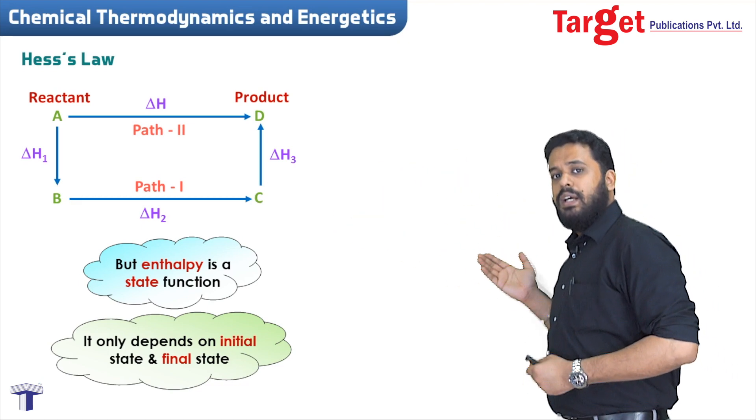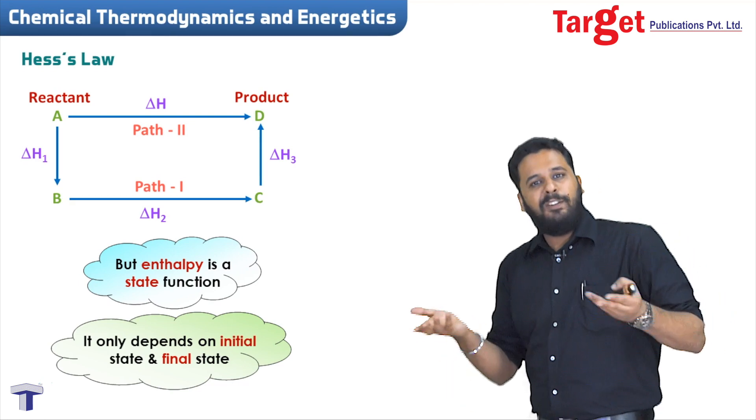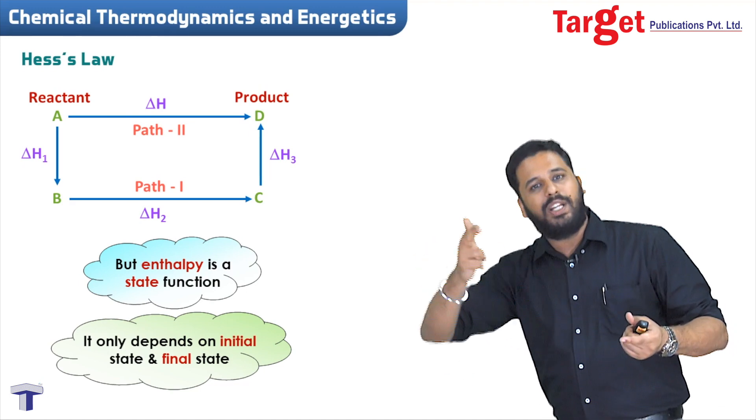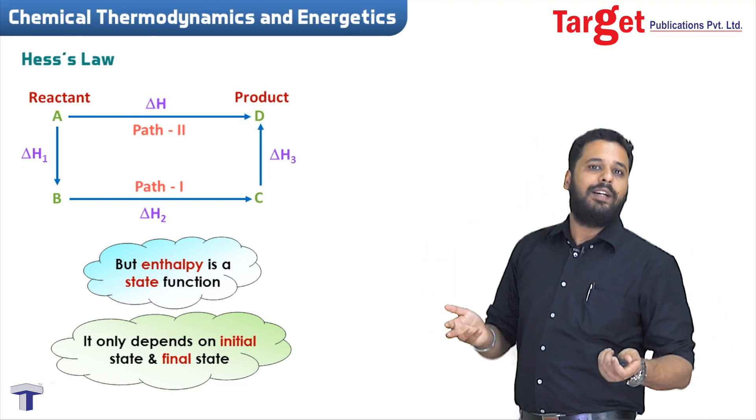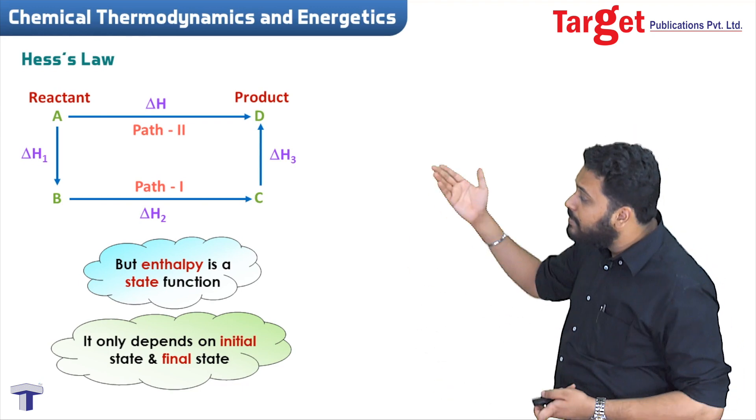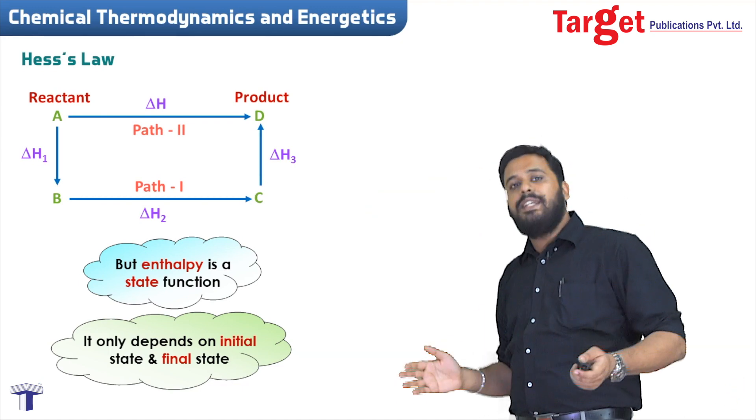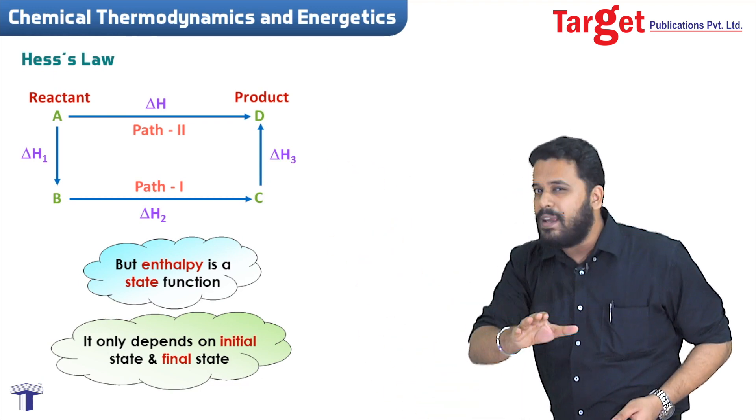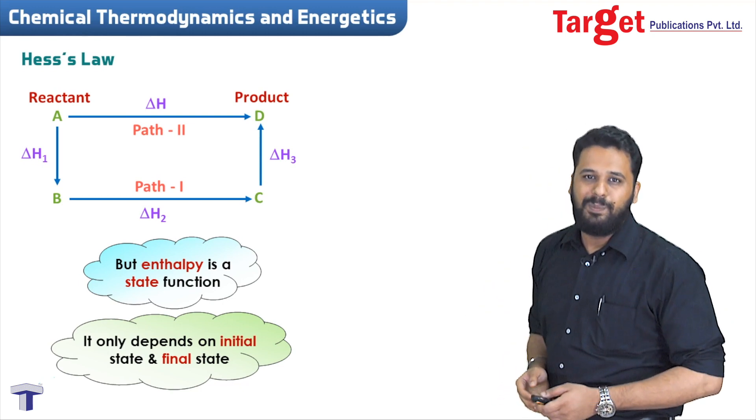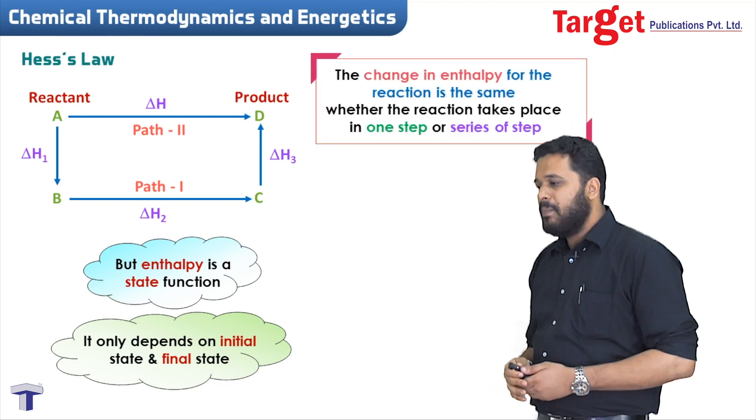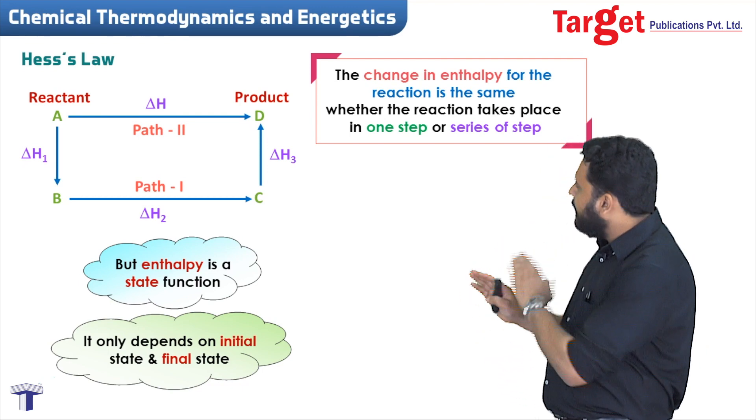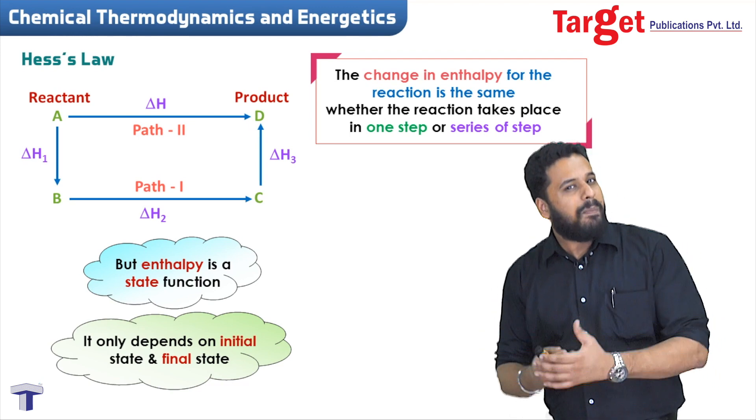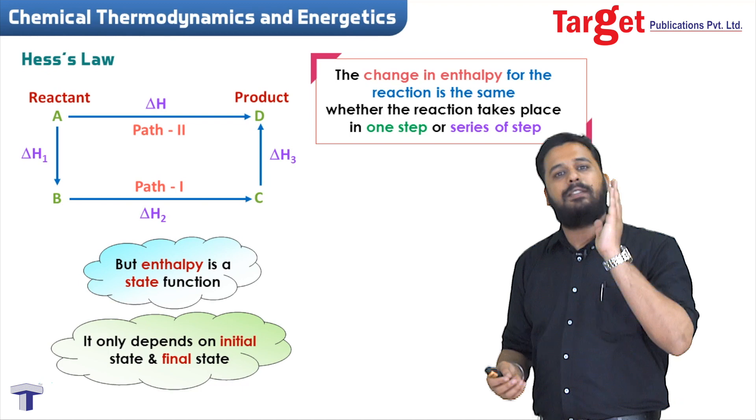If the initial condition and final condition are the same, it doesn't matter which path you take. Whether you take the short path or long path, delta H is going to remain the same. It's a state function. And this is exactly what is Hess's law. The change in enthalpy for a chemical reaction is the same whether the reaction takes place in one step or in a series of steps.